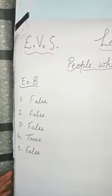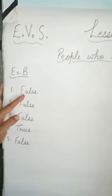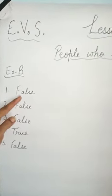Now number 1 says everyone does the same kind of job. Everyone does the same kind of job. No. So you will write here false, F-A-L-S-E, false.